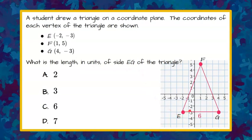So we can count 1, 2, 3, 4, 5, 6. So our segment, or side, of the triangle EG is 6. And we can see that that's answer C.